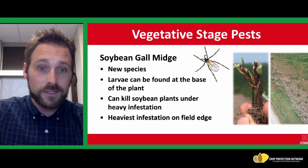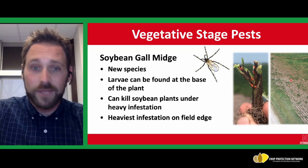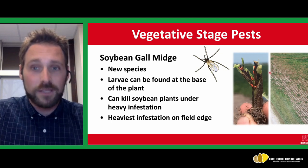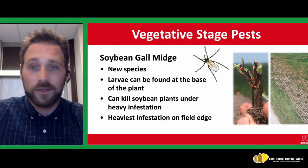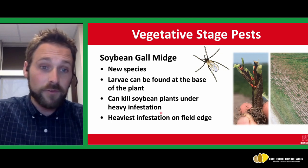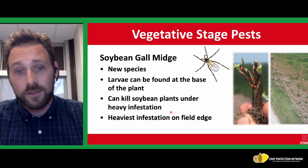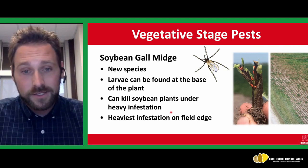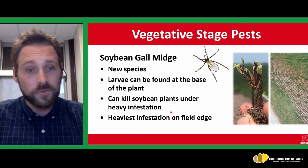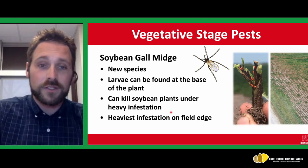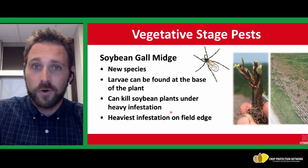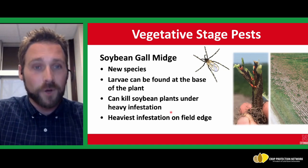What's more likely is that the plants won't be dead and you'll see these infestations at the base of the plant. The most likely chance of finding this insect is along the field border, as that's where the heaviest infestations occur.